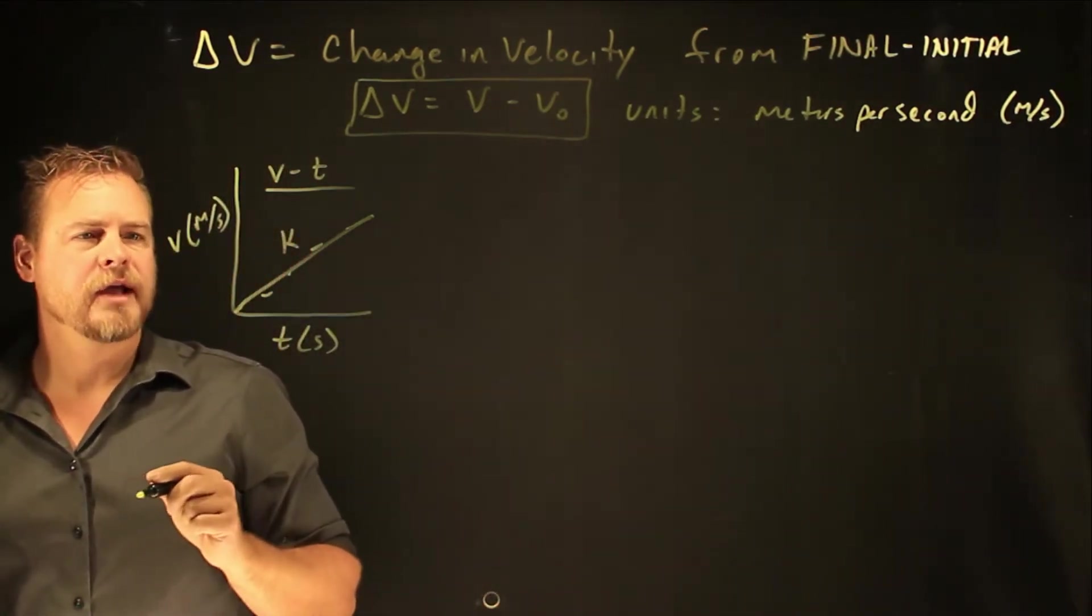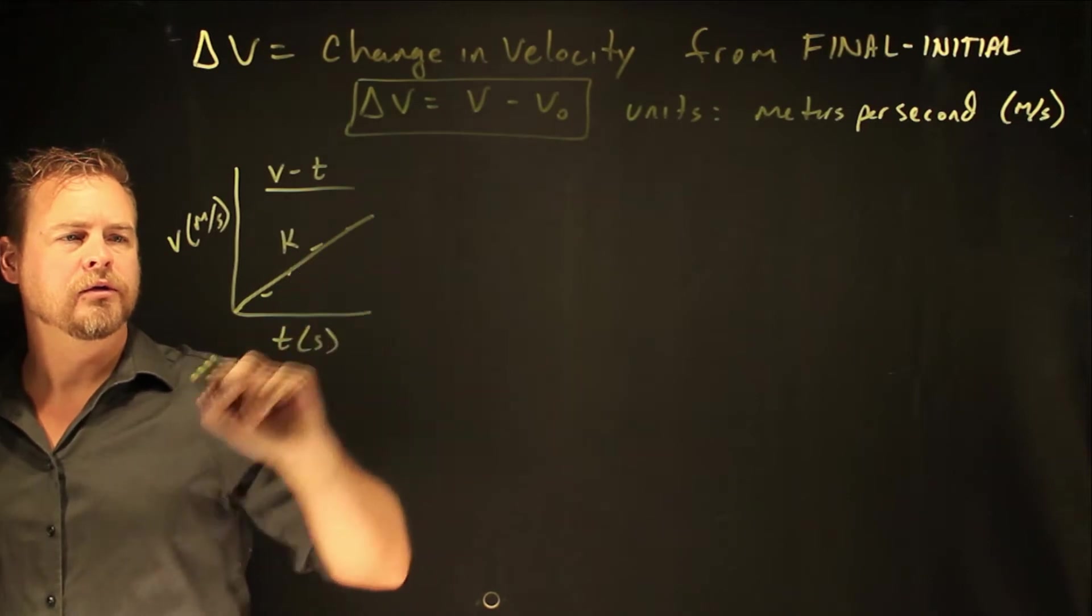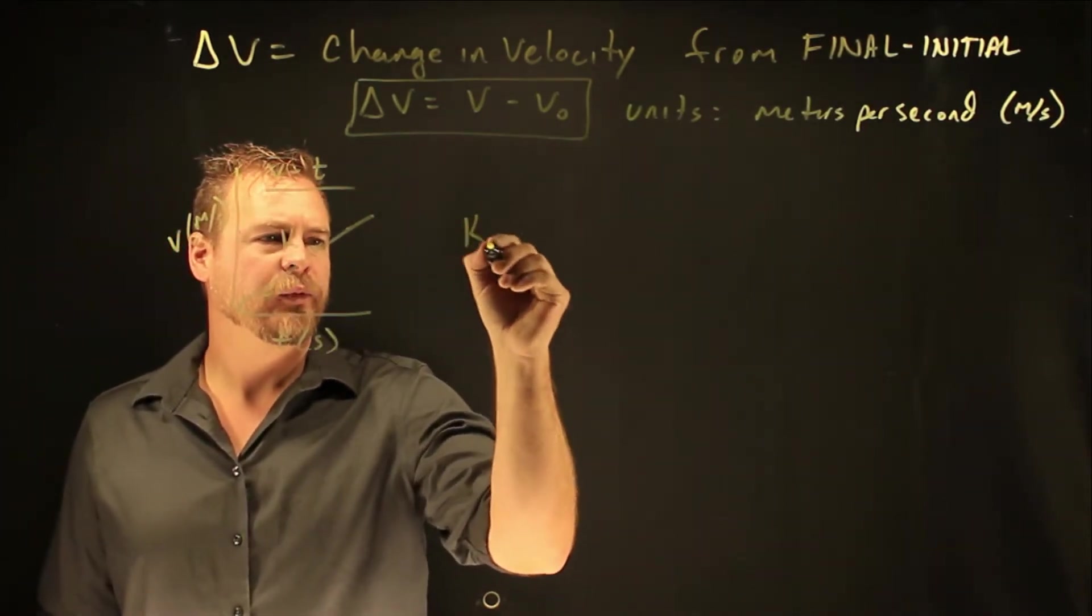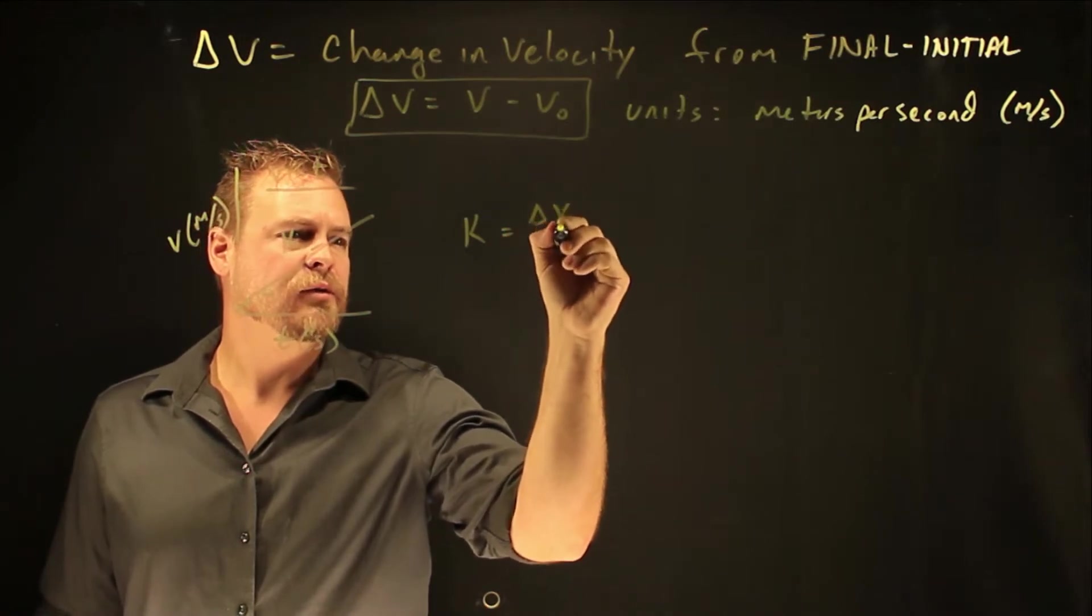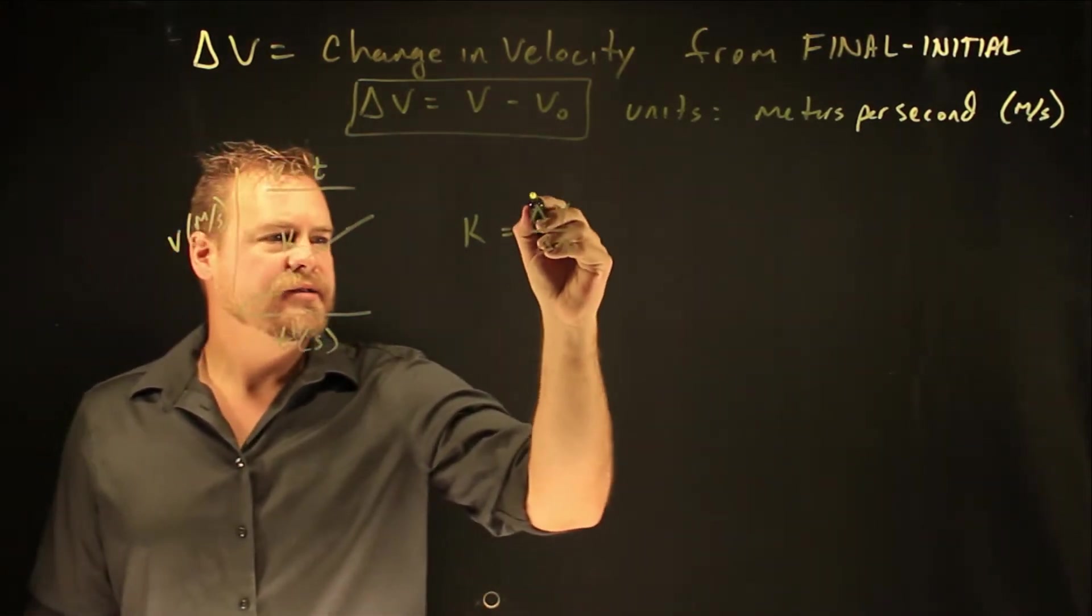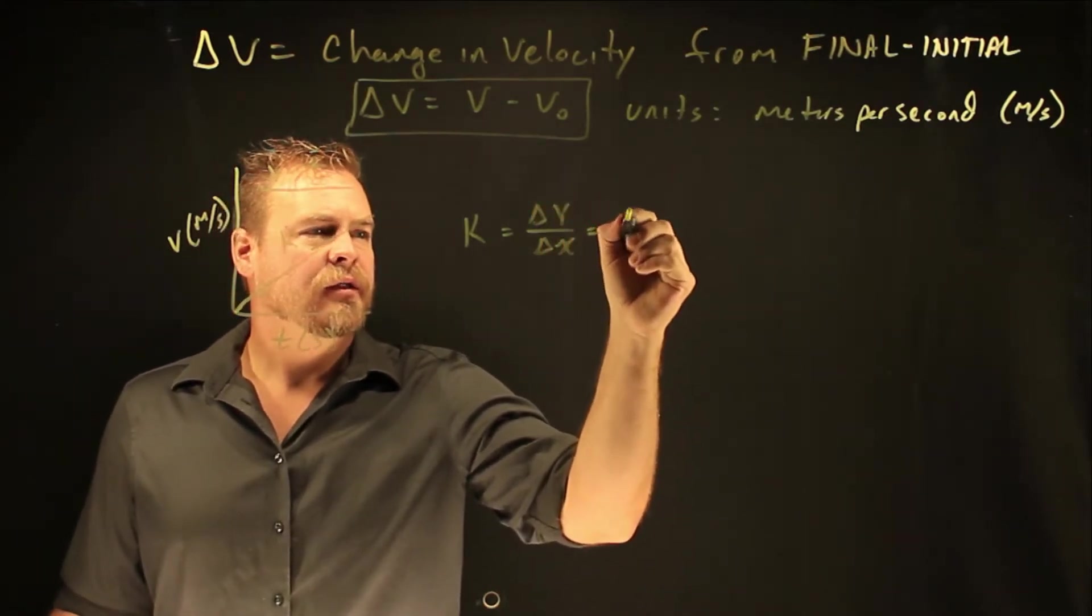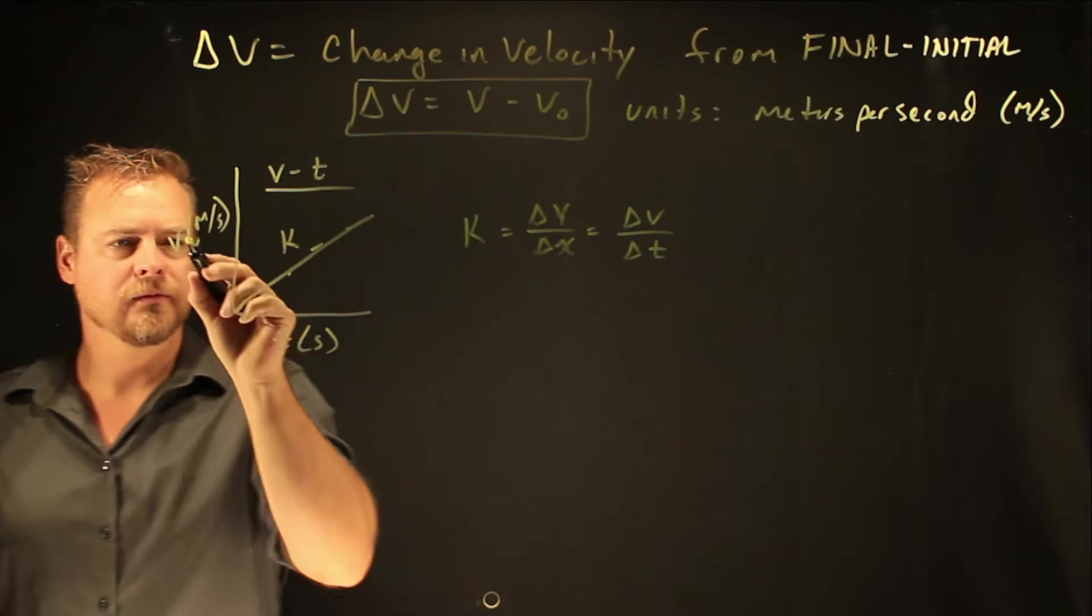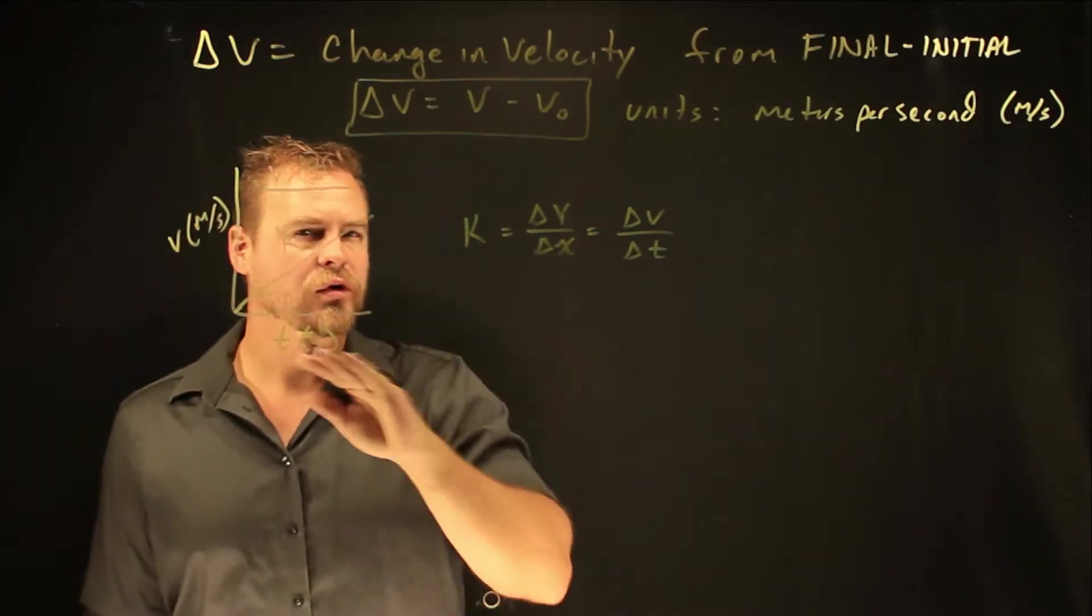Just like every other time we have a linear relationship between two things, we want to find slope. We understand that slope is the rise over run. We recognize that this is the change in velocity over the change in time for this specific setup.